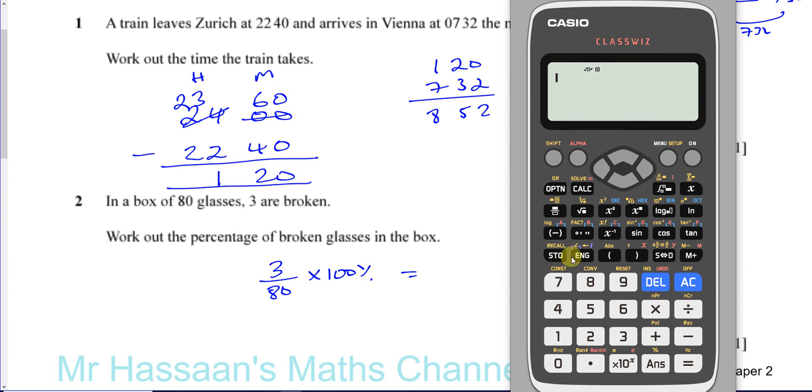So you have three over 80, multiplied by 100. Now, you don't write the percent symbol here because your answer is going to be in percent. It's a percentage. It's like a unit; you can think of it as a unit in that case.